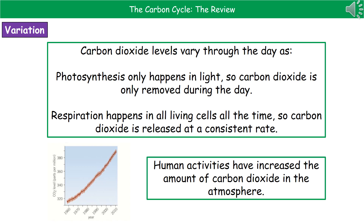The second time period to consider is over a long period of years. If we think about how carbon dioxide levels in our atmosphere have changed over the past few decades, the graph in the bottom left shows how they've increased. The main reason is down to human activity — because we're burning more fossil fuels and cutting down more trees through deforestation, our carbon dioxide levels have increased, and as a result we're seeing a contribution to global warming.